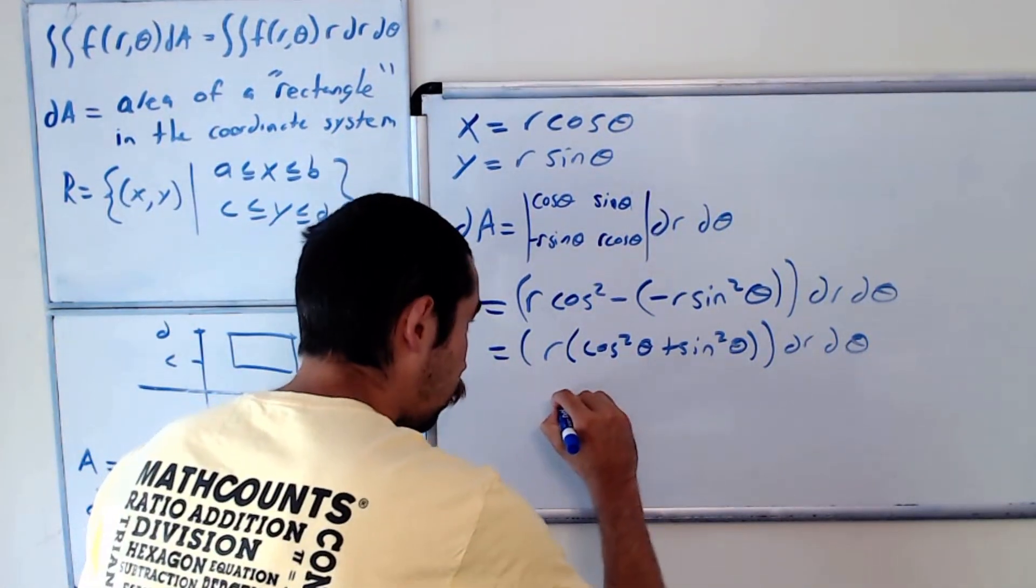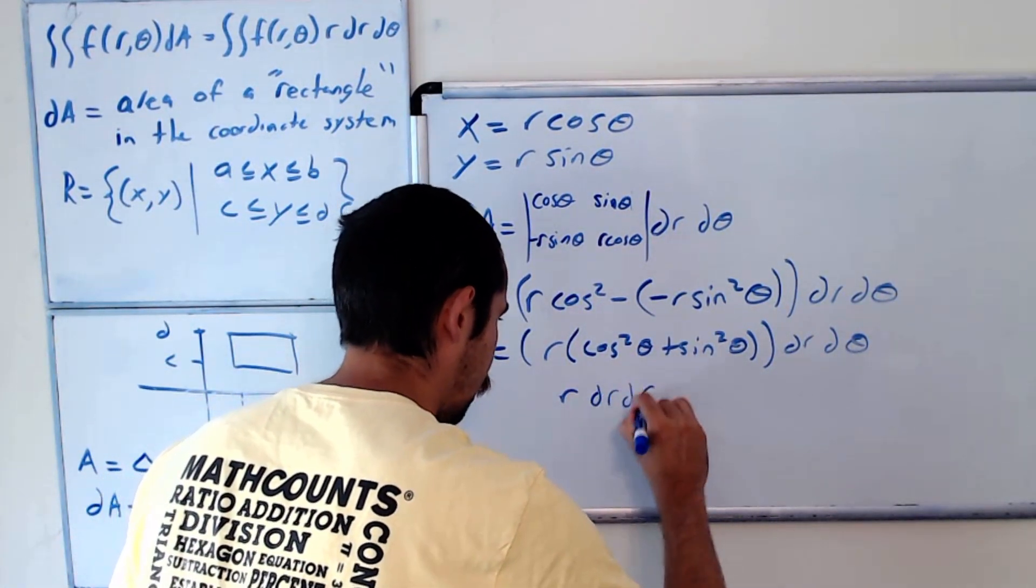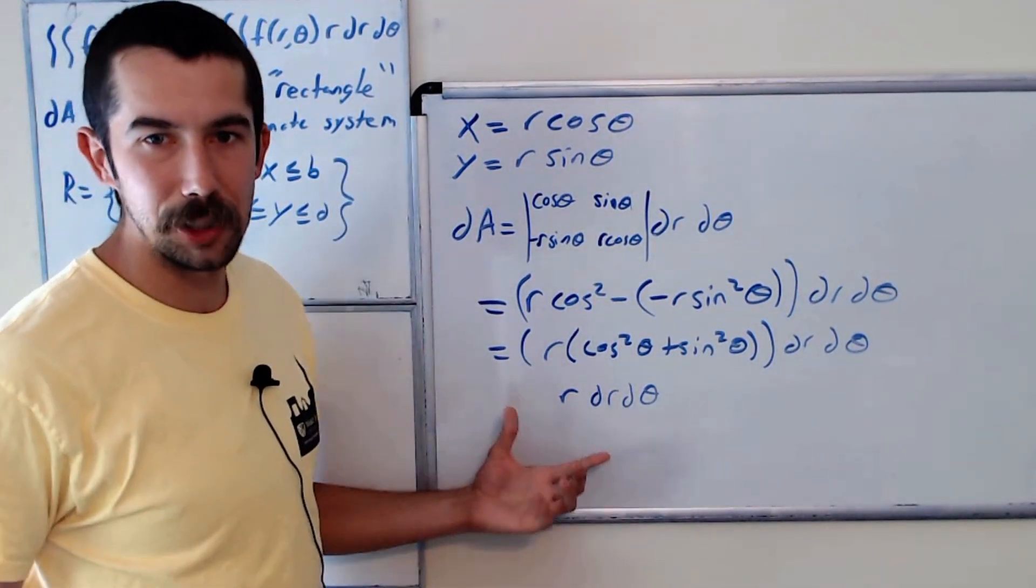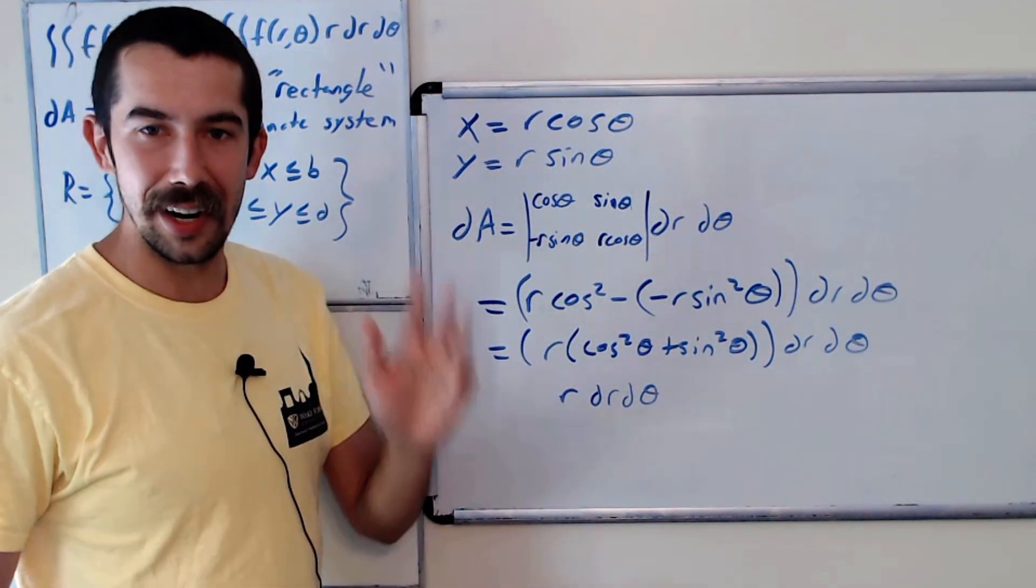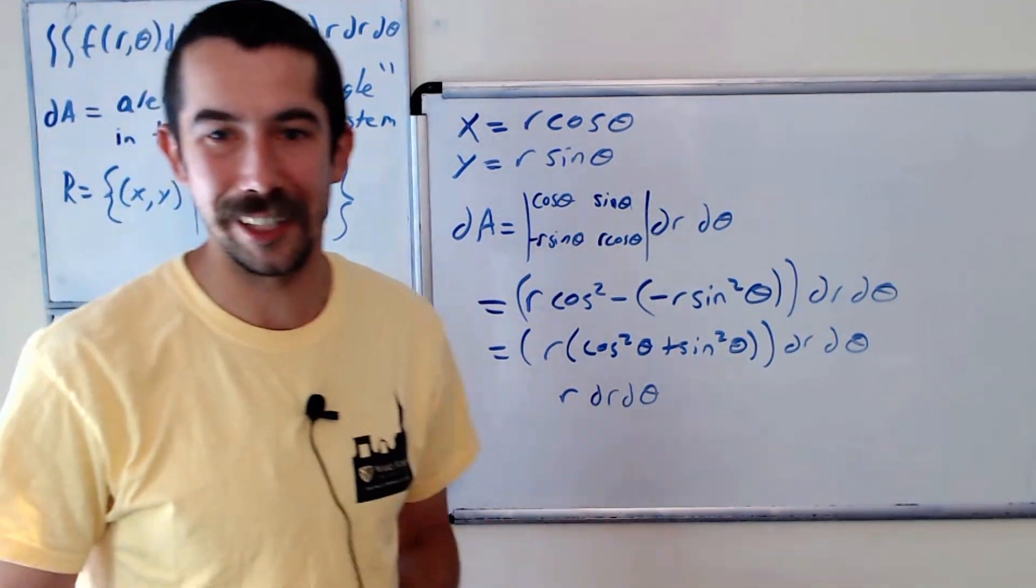So if you're not a big fan of geometry, you could always use the Jacobian to figure out what that extra factor you have to multiply by is. All right, well, let me know what you think. Thanks for watching.